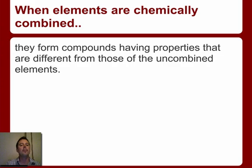When elements are chemically combined, they form compounds having properties that are different from those of the uncombined elements. So for example, we're going to see a couple of videos here, and we're going to talk about sodium, which is a metal, and chlorine gas, which is a non-metal.